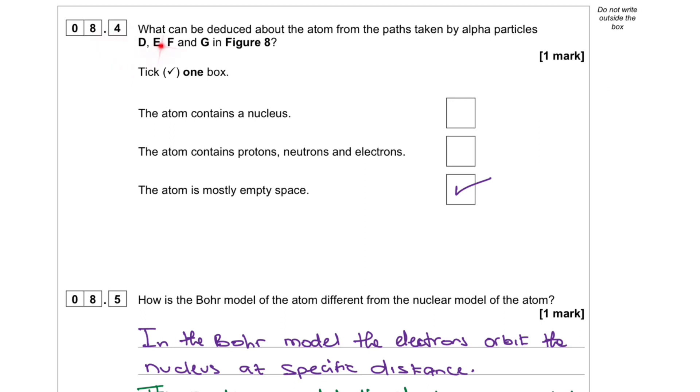8.4. What can be deduced about the atom from the path taken by alpha particles?